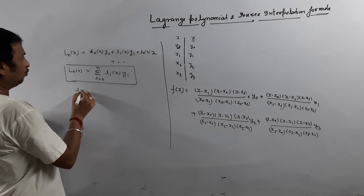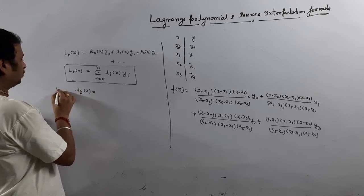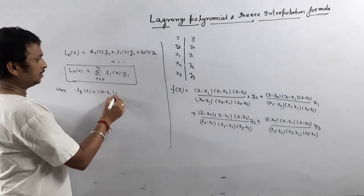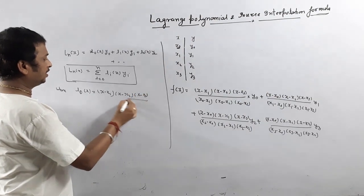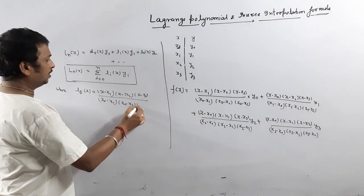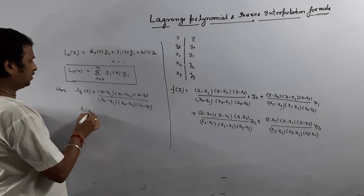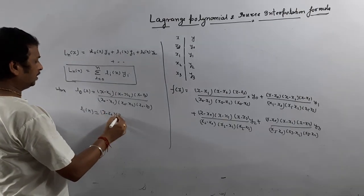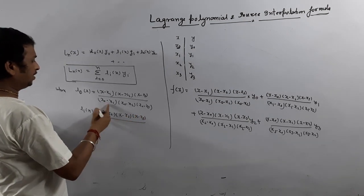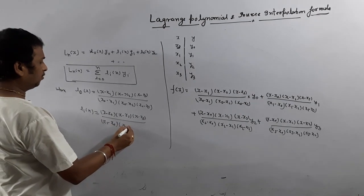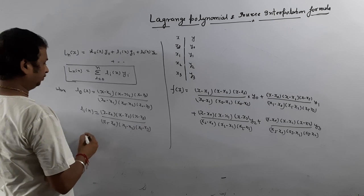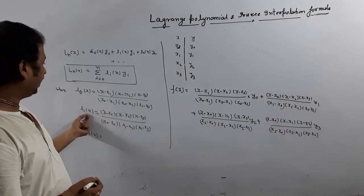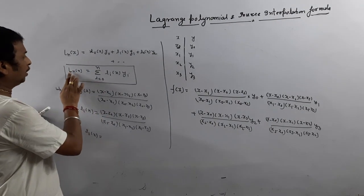In terms of Lagrangian polynomial, therefore: L0(x)·y0 + L1(x)·y1 + L2(x)·y2, and so on — that is summation of Li(x)·yi, i varying from 0 to n. This Ln(x) is known as Lagrangian polynomial. Where: L0(x) is the coefficient of y0, defined as (x minus x1)(x minus x2)(x minus x3) divided by (x0 minus x1)(x0 minus x2)(x0 minus x3). L1(x) is the coefficient of y1: (x minus x0)(x minus x2)(x minus x3) divided by (x1 minus x0)(x1 minus x2)(x1 minus x3). Similarly we can write L2(x).